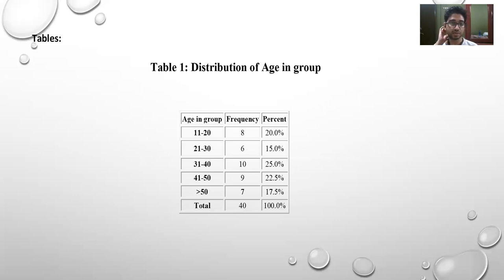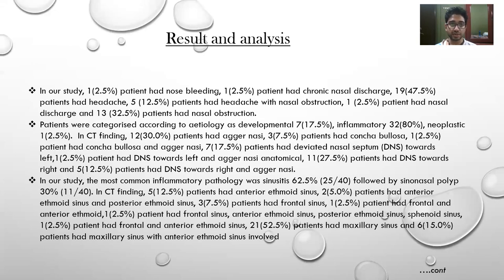The age group distribution shows that the maximum number of patients, which is 10 (25%), were in the age group of 31 to 40 years. Regarding clinical presentation, one patient had nose bleeding and one had chronic nasal discharge. 19 patients had headache, 5 had headache with nasal obstruction, 1 had nasal discharge, and 13 had nasal obstruction. Approximately 47.5 percent of patients had headache, which was the maximum presenting complaint.